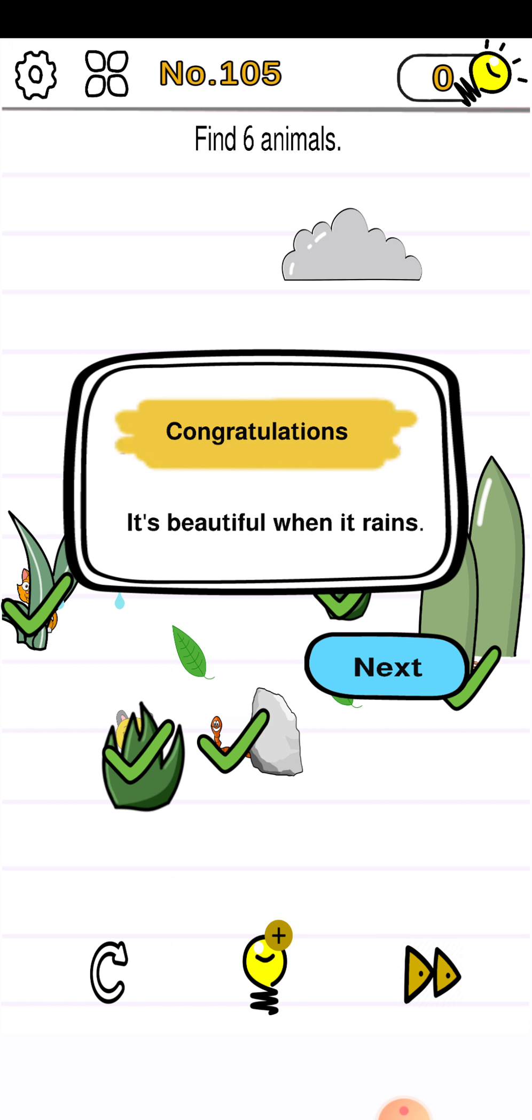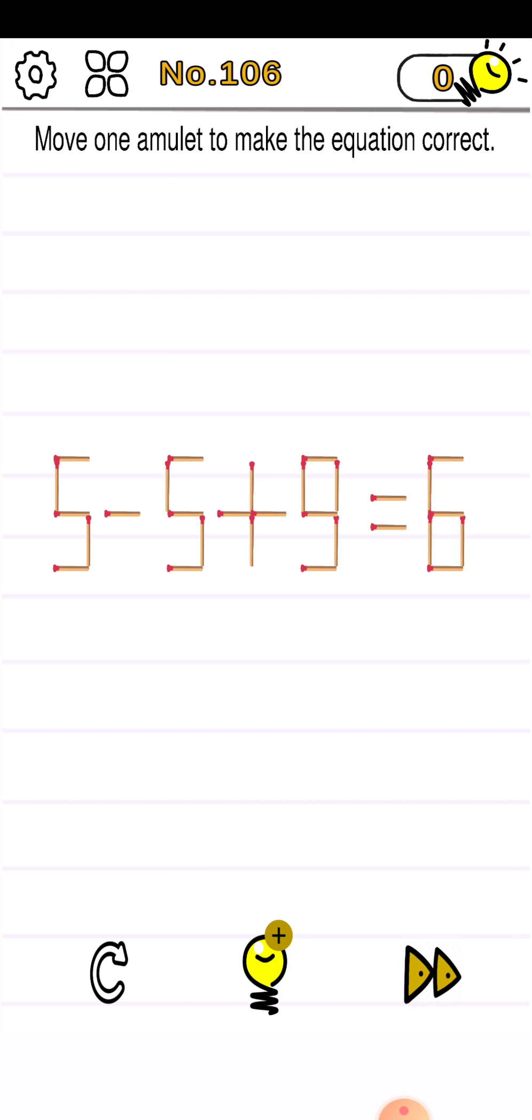Let's proceed to level 106. Move one matchstick to make the equation correct. So five minus five plus nine equals six. So let's see what we can do. Press your finger on this matchstick and place it here.